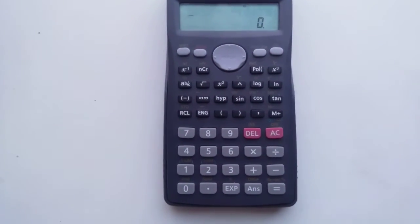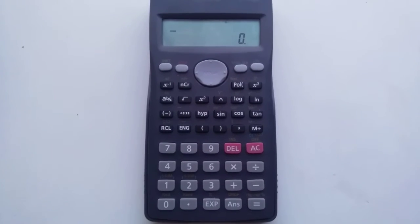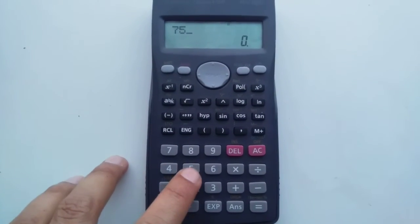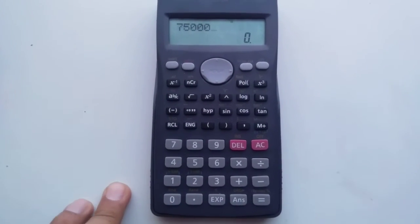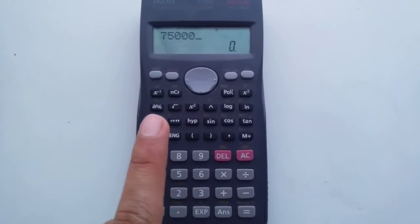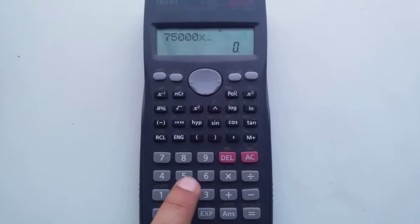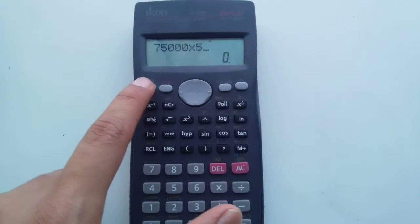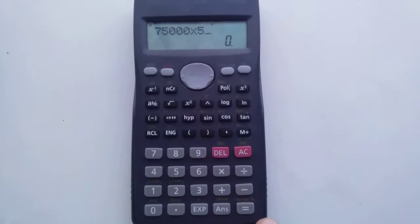Then what you have to do, for example, you have an amount of 75,000 and you want to calculate how much is the 5% of 75,000. Simple, multiply 5, shift, and then equal sign.